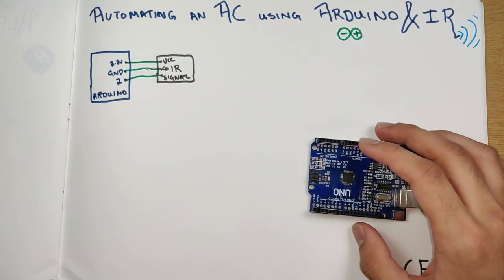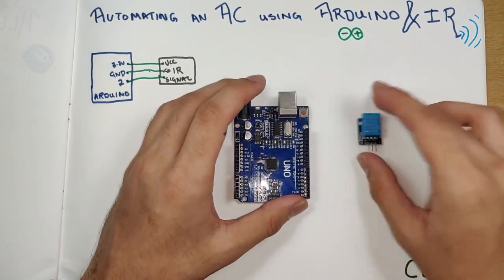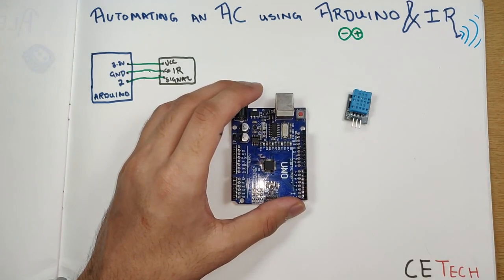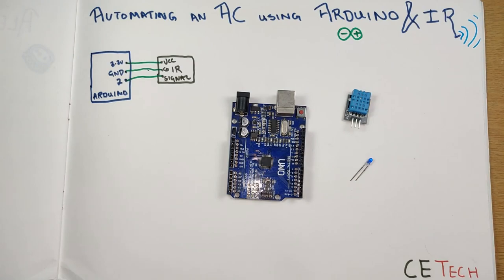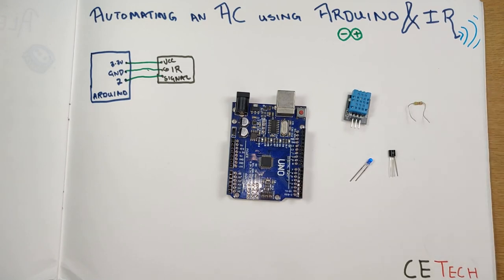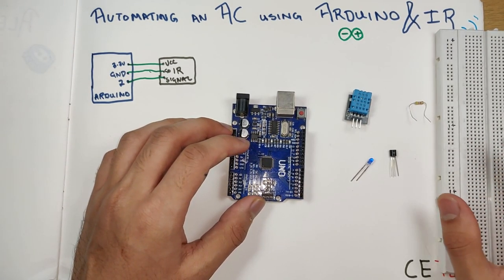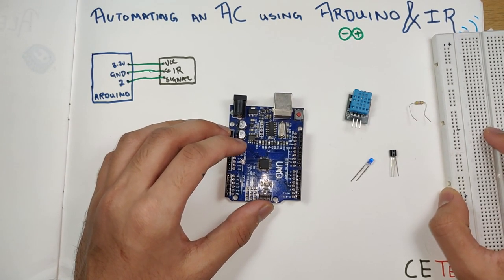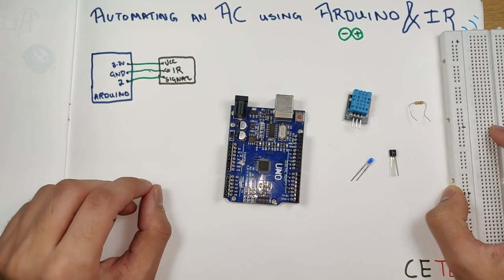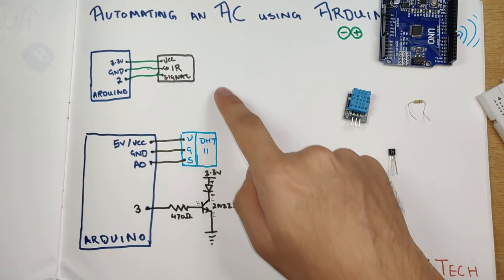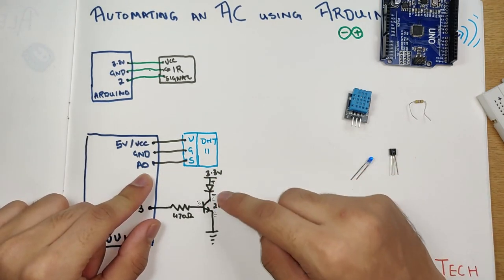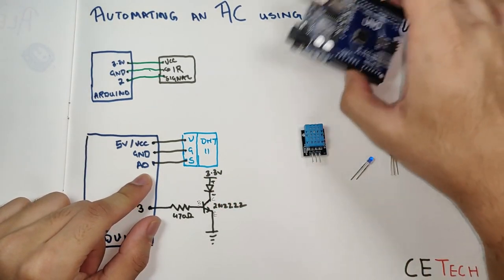For the second step we need the DHT11, the Arduino, an IR LED — I'll use a smaller one — a 2N2222 NPN transistor, and a 470 ohm resistor. For simplicity I'll build this circuit on a breadboard. The second circuit is a little more complex than the first.